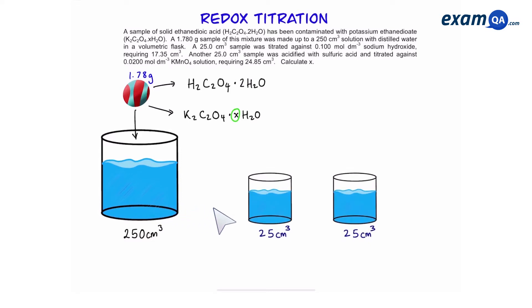Then two identical 25 centimeter cubed samples are taken from that. With one of them we titrate manganate and with the other one we titrate sodium hydroxide. And of course the amount of manganate and sodium hydroxide has been given to us.